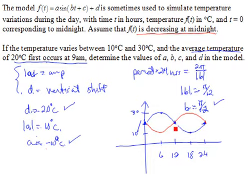What I also know is that the first time that we obtain our minimum temperature, or our average temperature of 20 degrees, is supposed to occur at 9 a.m.